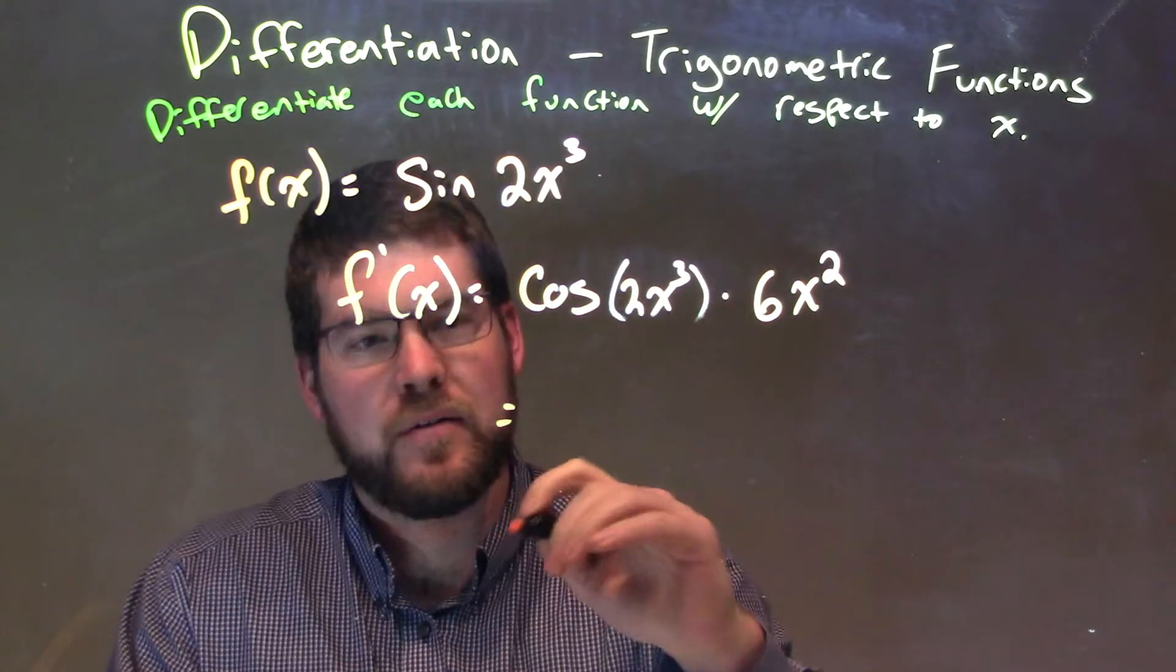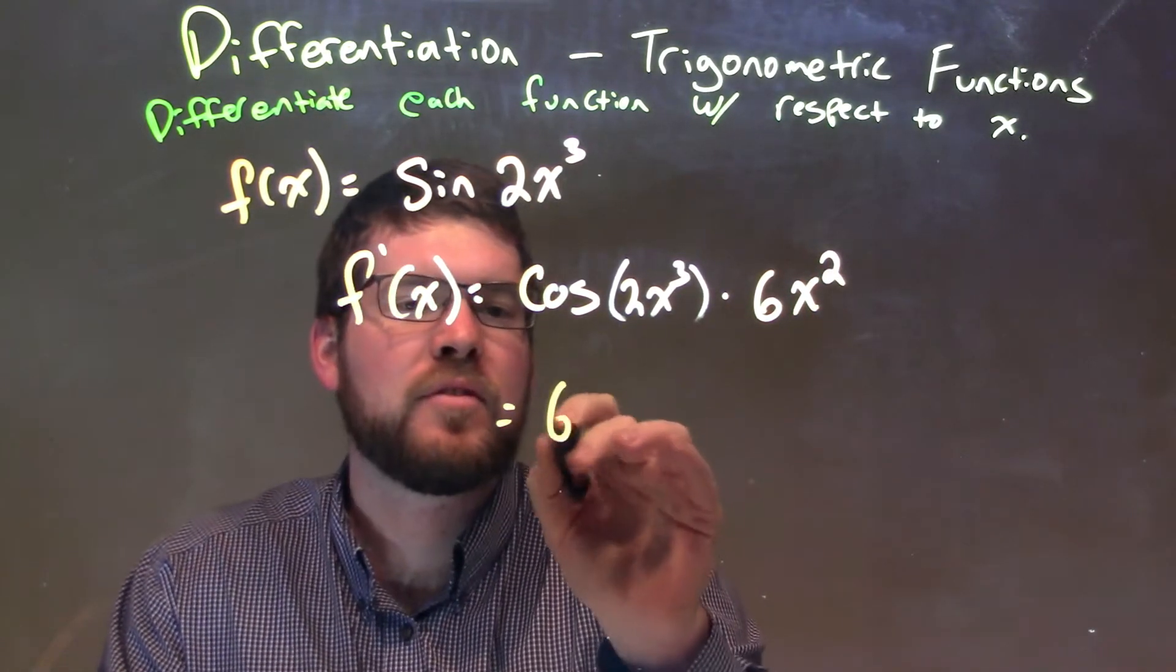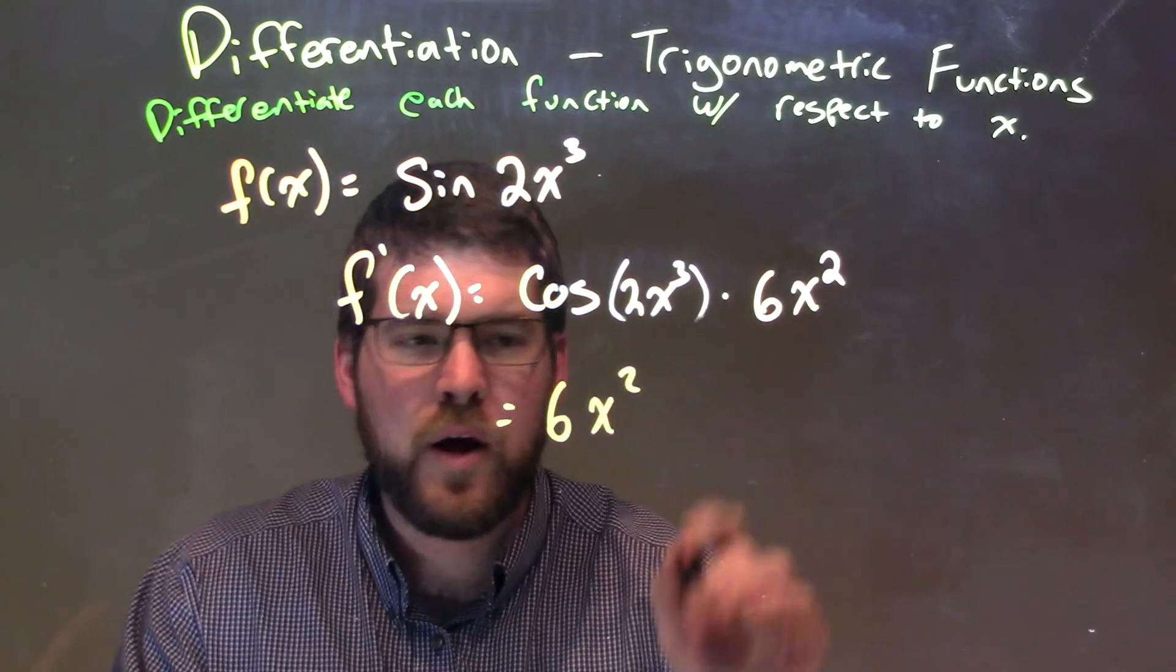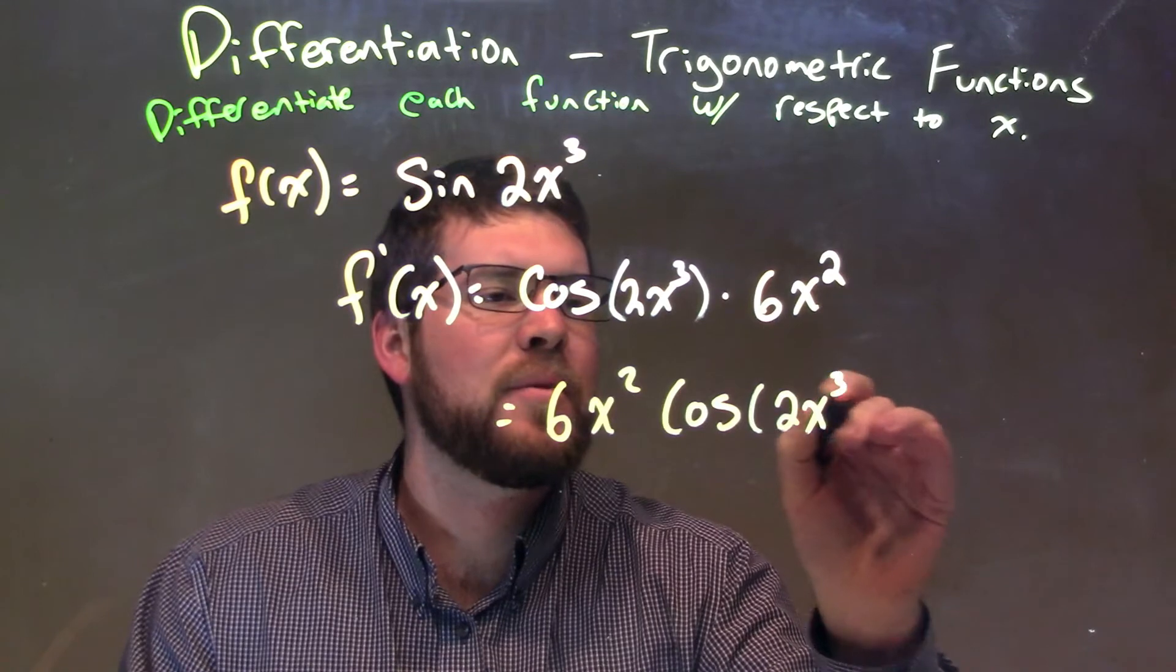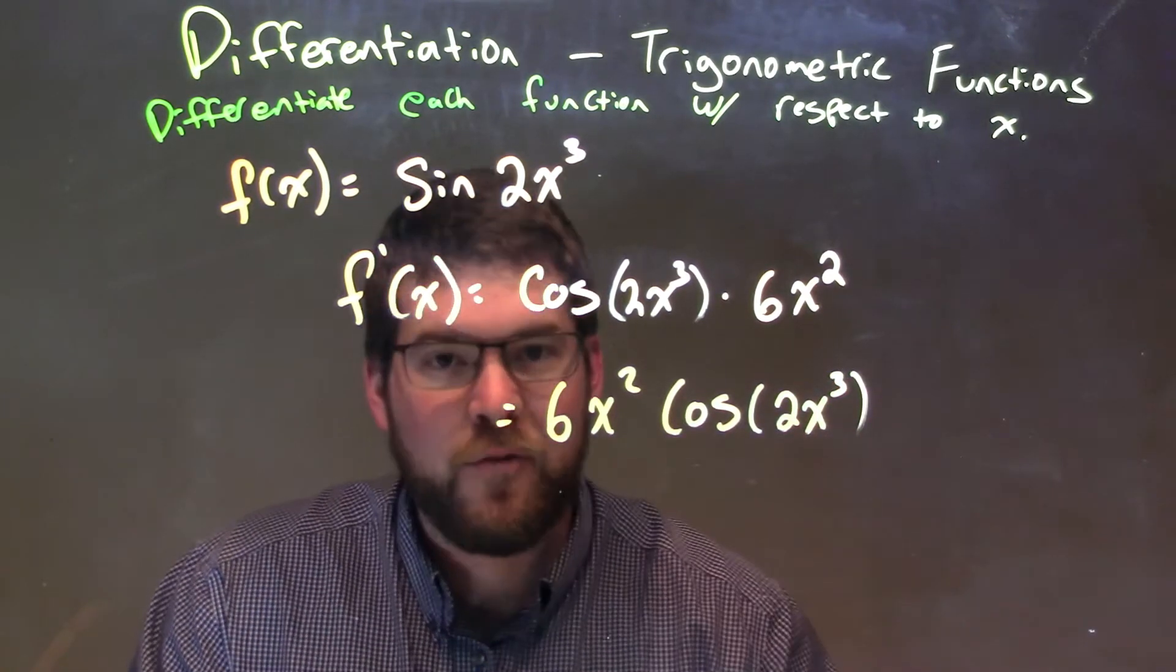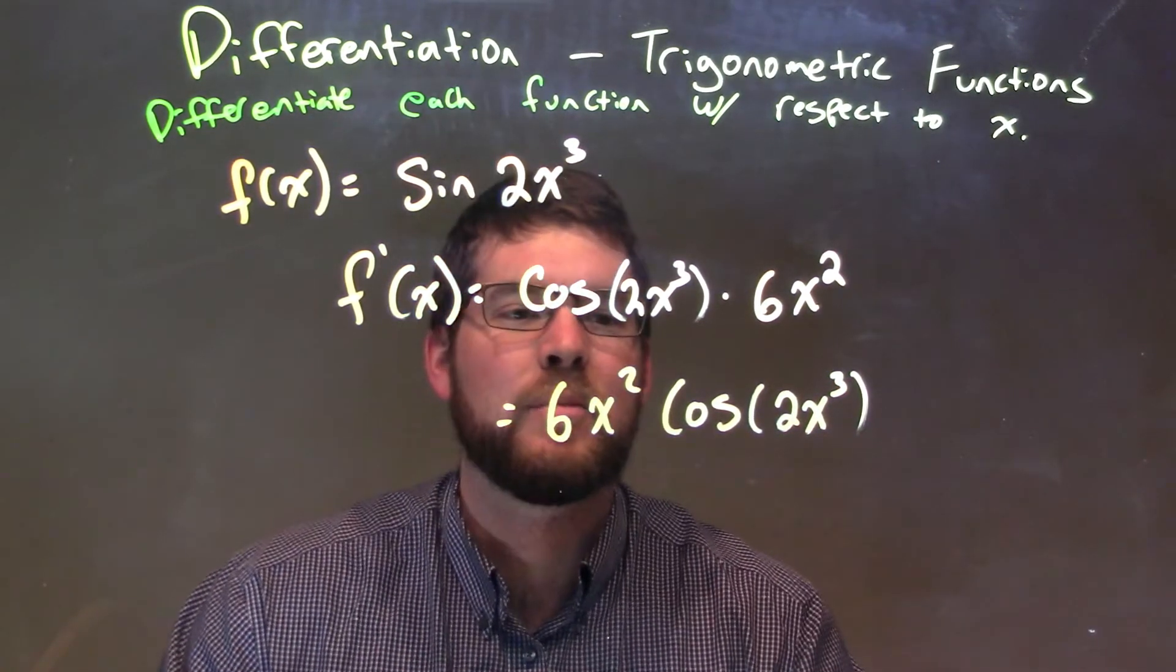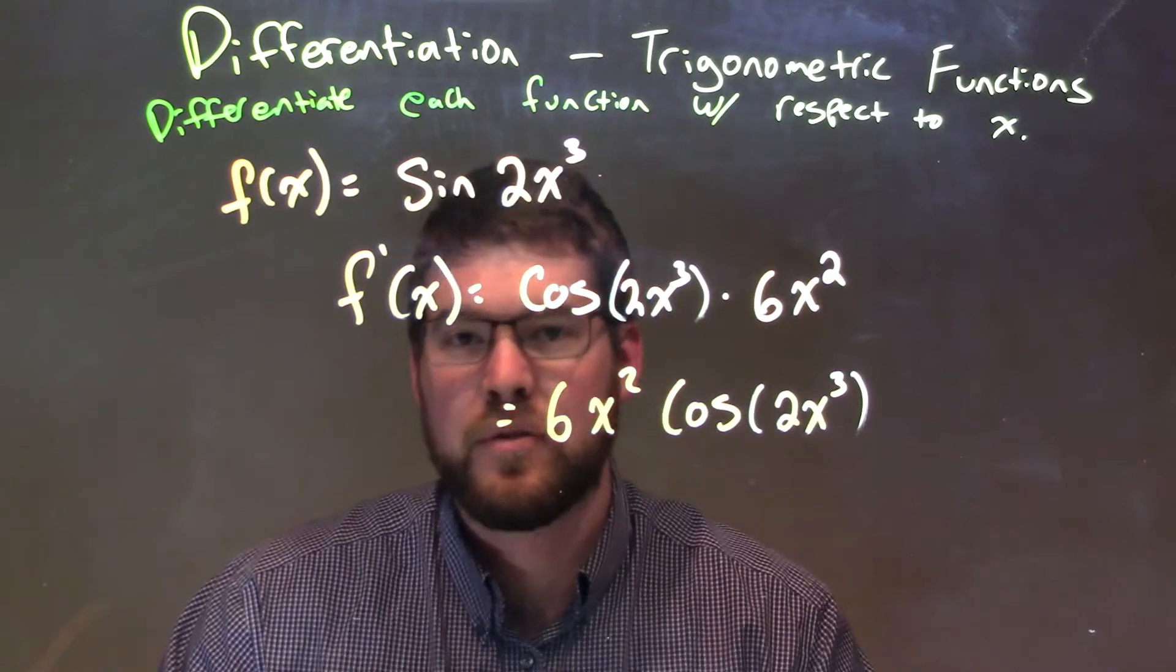Now, we can rewrite this and put the 6x squared out front. So, we have 6x squared out front here, times the cosine of 2x to the third. And there we have it. We have our derivative of 6x squared times the cosine of 2x to the third.